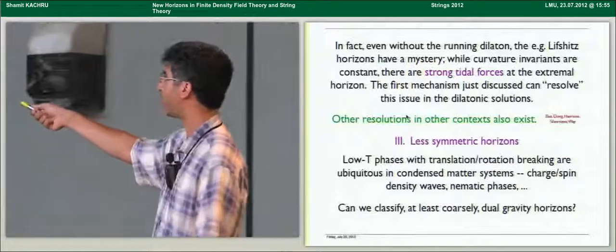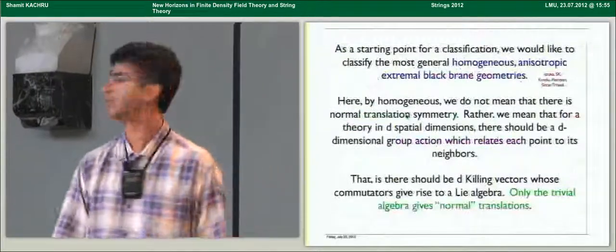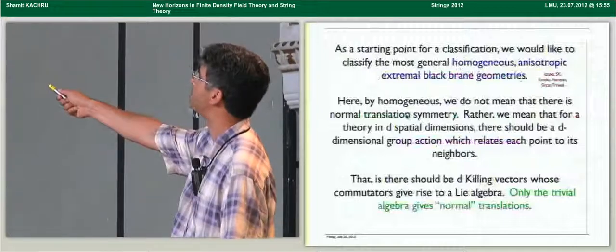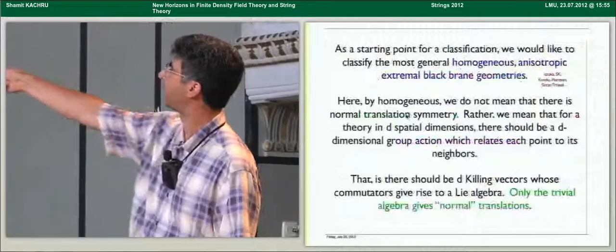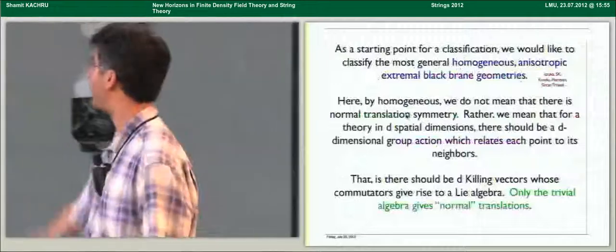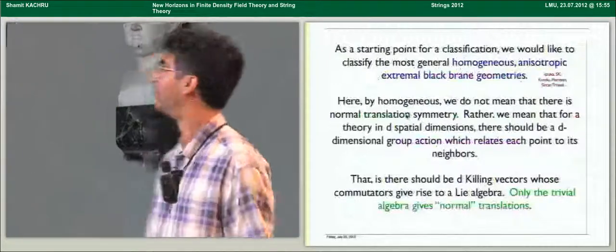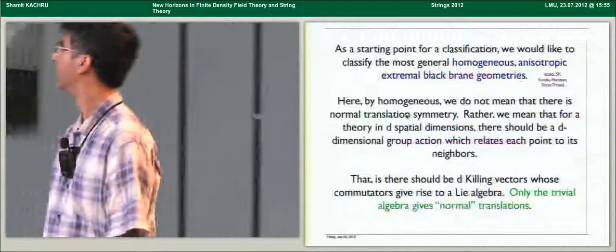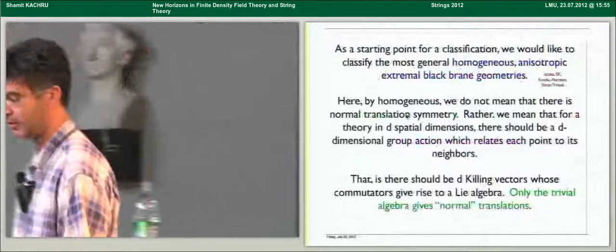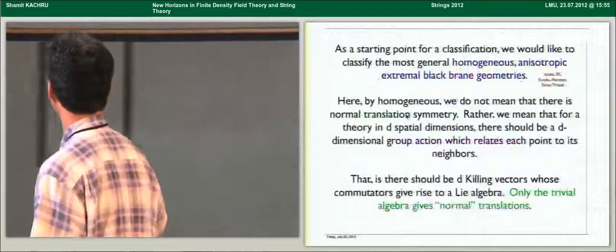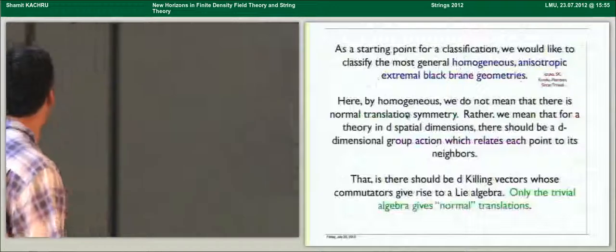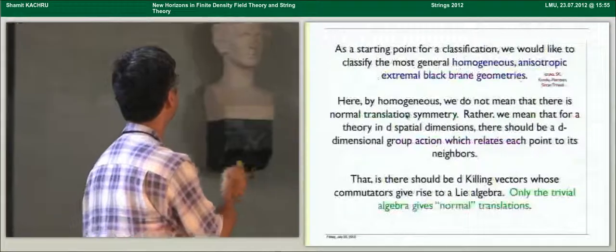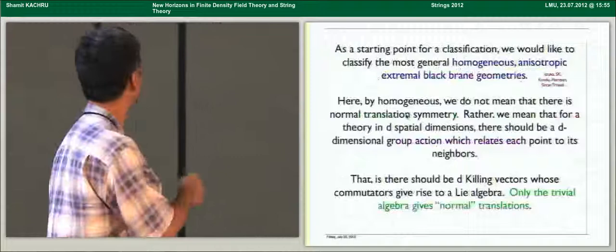Now, as a starting point for classification, because I'm weak, I'll just try to classify the most general homogeneous but anisotropic extremal black brane geometries. And then, if you're braver, you can try to make things inhomogeneous too. So here, by homogeneous, I do not mean that you have translation symmetries that commute with each other in the normal way. What I mean is that for a theory in D spatial dimensions, there should be some D dimensional group action that relates each point to its neighbors in a small neighborhood. Or, more technically, there should be D killing vectors whose commutators give rise to a Lie algebra and only the trivial such algebra where all the structure constants vanish gives the normal translations.